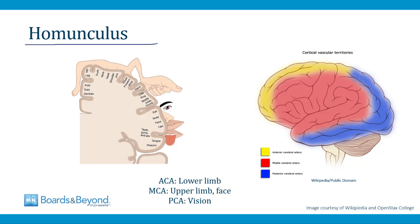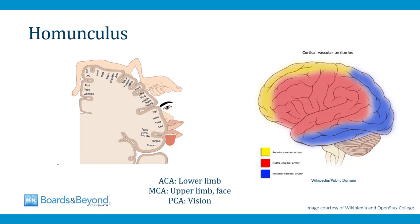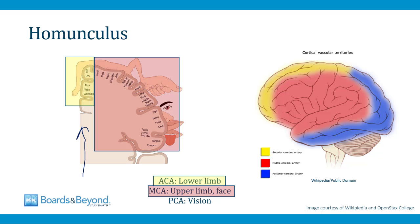The homunculus refers to the way that motor neurons are laid out in the cortex. In a cross section through the cortex, the neurons that supply the leg and feet are found medially, the neurons for the arm and hands are in the middle, and the neurons for the face are laterally. The anterior cerebral artery supplies the medial portion of the homunculus — mostly the legs and feet. The middle cerebral artery supplies the portion with the face and hands. The posterior cerebral artery supplies the back of the brain, including the occipital lobe, which is very important for vision — so PCA strokes tend to affect vision.